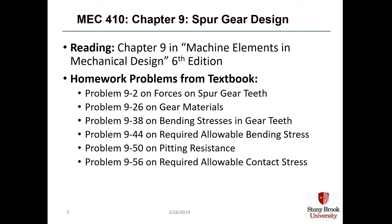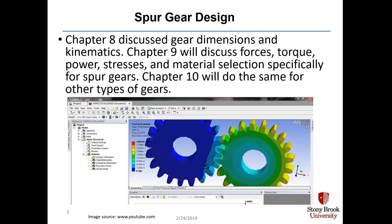Welcome to Chapter 9 in our course MEC 410 on machine design. This week we're going to study spur gear design from the point of view of the forces and stresses on the gear teeth. We have six problems for homework shown on this slide. In Chapter 8 we discussed gear dimensions and kinematics. This time in Chapter 9 we will discuss forces, torque, power, and stresses and material selection for spur gears. In Chapter 10 we'll do the same for other types of gears.